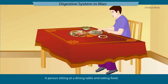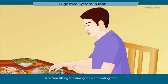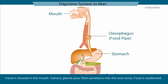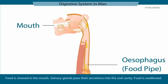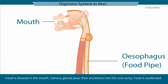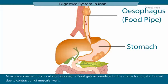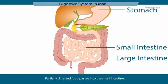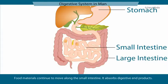A person is seen sitting at a dining table eating food. Food is taken in through the mouth. You can see the digestive system of humans on the screen. First, the food is chewed in the mouth. Salivary glands pour saliva into the oral cavity. The food is then swallowed. Muscular movement in the esophagus helps move food from the esophagus into the stomach. Food accumulates in the stomach and gets churned due to contraction of the muscular walls. The partially digested food is then passed into the small intestine, where the end products of digestion are absorbed.